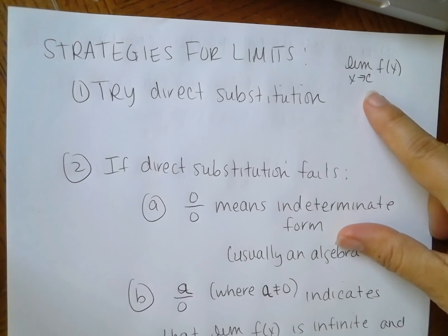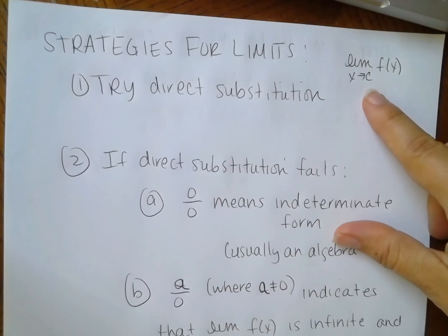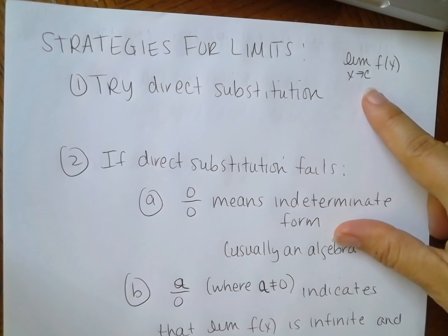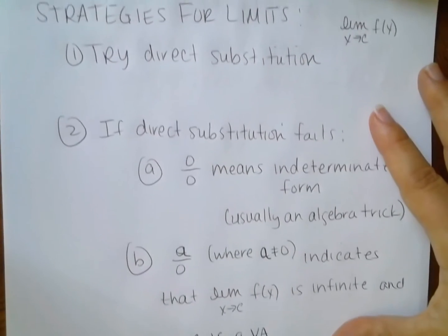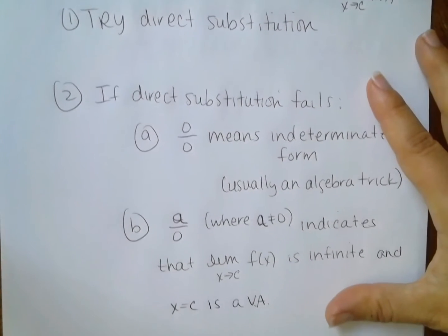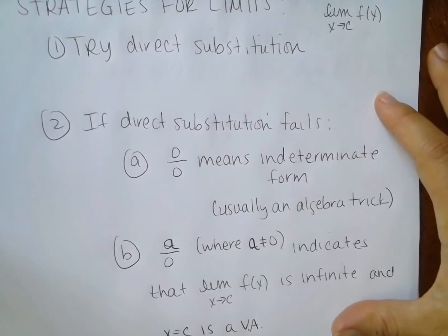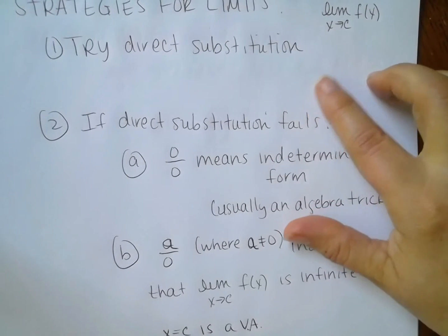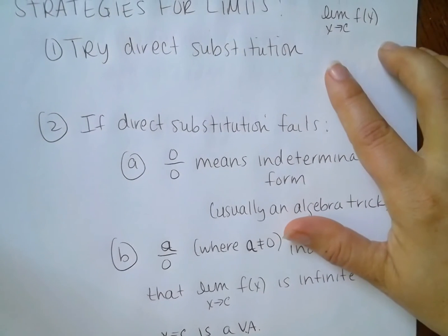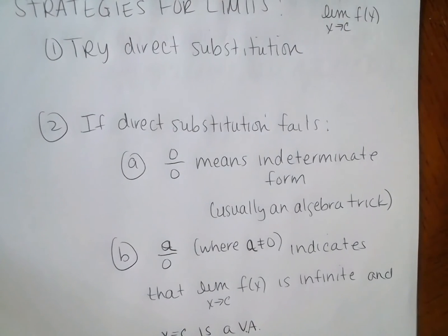Now if I don't get out a number — if I'm dividing by zero or I get something else — then we need a different strategy. Today we're going to talk about those different strategies. This is basically the procedure: first you try direct substitution. If you get your number out, then that means it's continuous there and you're finished.